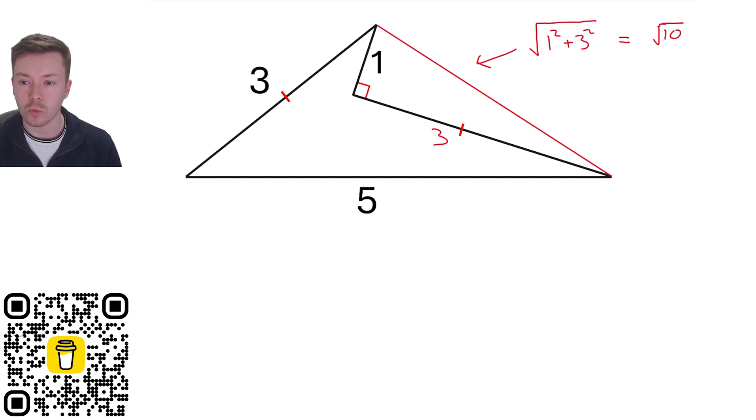Now we have three sides of a triangle: three, five, and root 10. If we can work out the area of this large triangle and subtract the area of the smaller triangle, that will give us the area we're looking for.